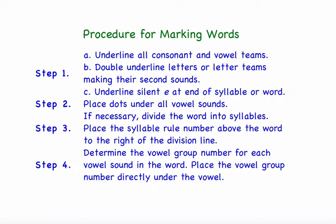This is the procedure we use to mark words after we have spelled them. Step one: underline all consonant and vowel teams. Step two: double underline letters or letter teams making their second sounds. Step three: underline silent E at the end of a syllable or word. Step four: place dots under all vowel sounds. Step five: if necessary, divide the word into syllables — for multiple syllable words you must divide it — and place the syllable rule number above the word to the right of the division line. Finally, determine the vowel group number for each vowel sound and place it directly under the vowel.